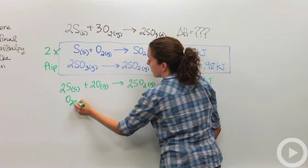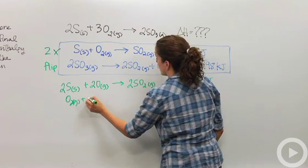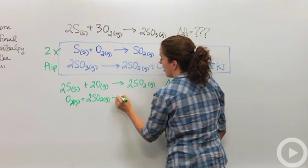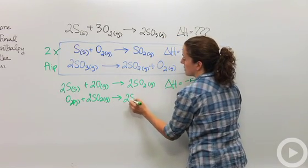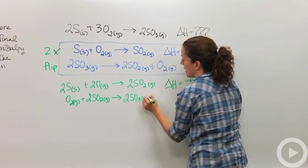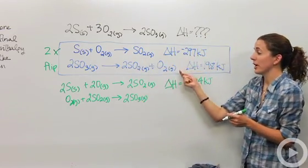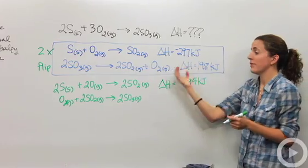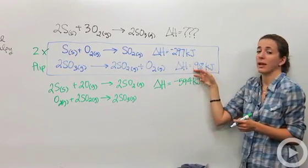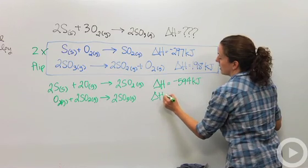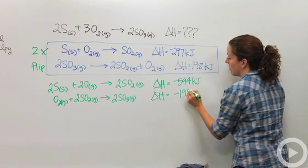Oxygen gas plus two moles of sulfur dioxide gas is going to give me two moles of sulfur trioxide gas. And because I flipped it, this forward direction is going to be an endothermic reaction. But if I reverse it, it's going to become an exothermic reaction. So this is going to be negative. So my delta H is going to be negative 198 kilojoules.